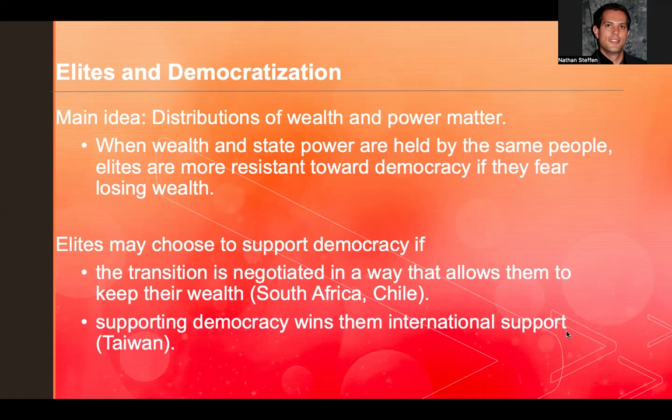Elites are not always resistant to democracy. They might well support it under conditions that give them feelings of security. A democratic transition could be negotiated where elites give up a little political power but their wealth is protected by the new government. We can see this in the democratic transitions of South Africa and Chile. Elites might also support democracy if it grants them international support and governing legitimacy from key allies, such as Taiwan.